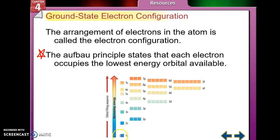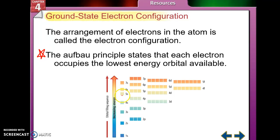So electrons fill the 1s orbital first, then 2s, then 2p, then 3s, then 3p, then 4s, then 3d, then 4p, then 5s, and on and on.